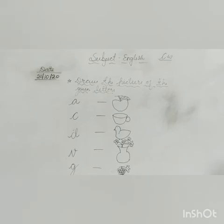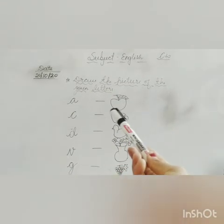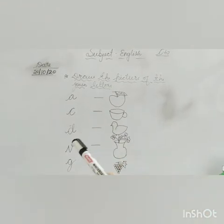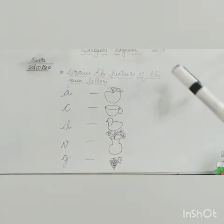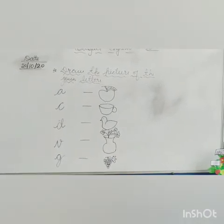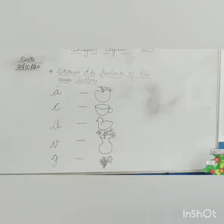Okay, so kids, let's see what we made. A for apple, C for cup, D for duck, V for vase, G for grapes. So this way you have to do your work in your English notebook. Okay, so kids do it well. Thank you, bye bye.